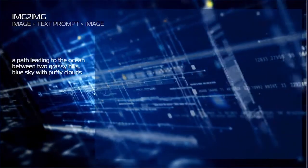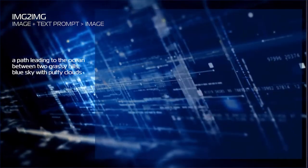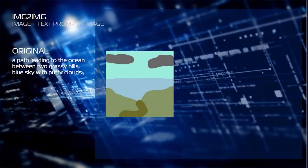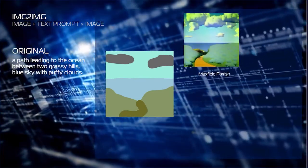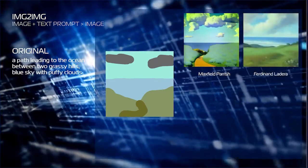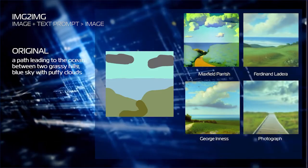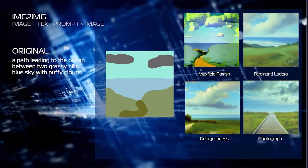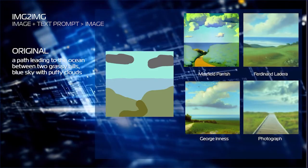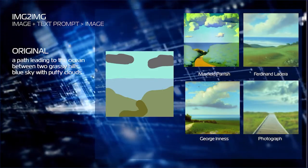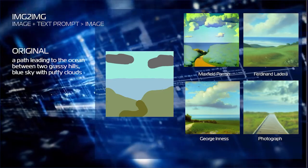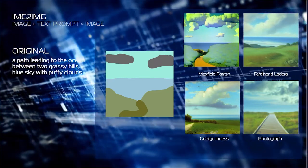Here's a drastic example of image to image. A rough landscape image quickly generated in Photoshop was sent to a local Stable Diffusion installation. I told it to generate it by Maxfield Parrish, by Ferdinand Ladera, by George Ennis, and also as a photograph. You can see four distinctly different images.